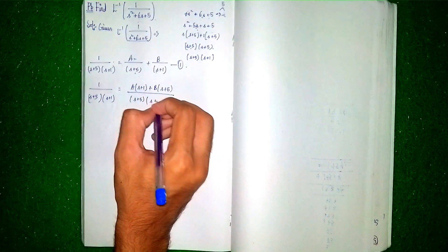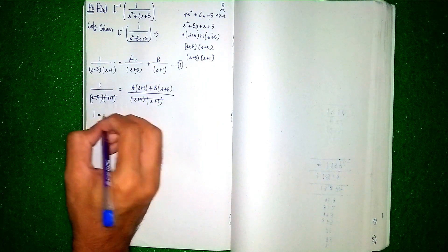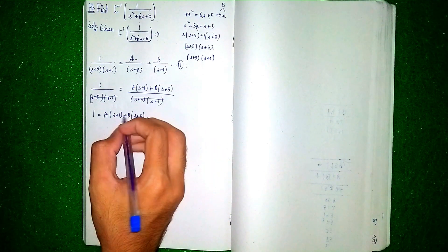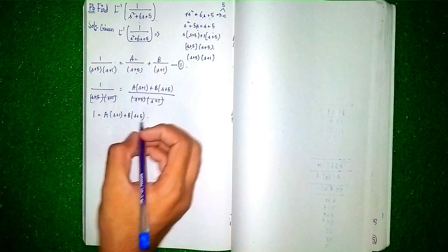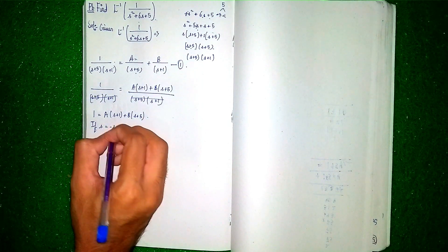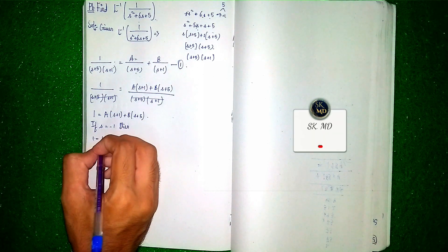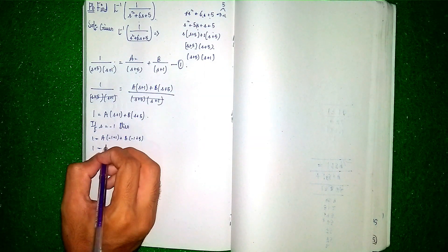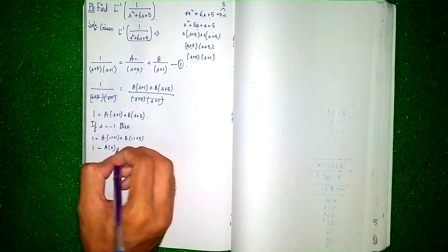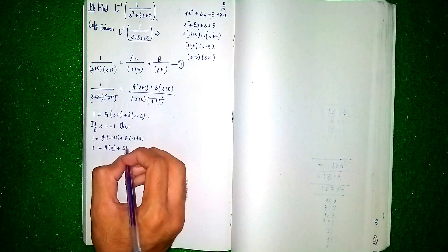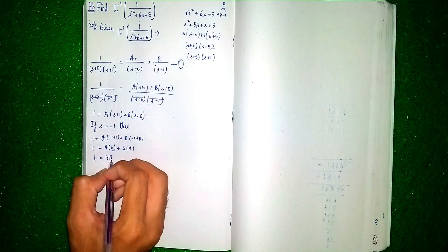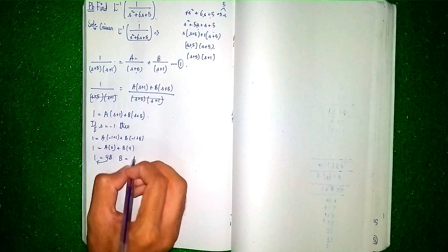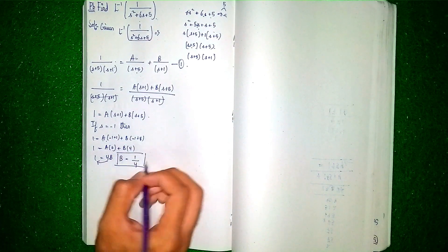To find B, let s = −1. Then 1 = A(−1 + 1) + B(−1 + 5), which gives 1 = A(0) + B(4). So 1 = 4B, and therefore B = 1/4.